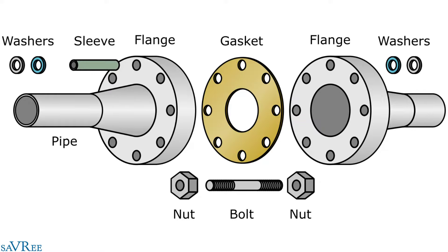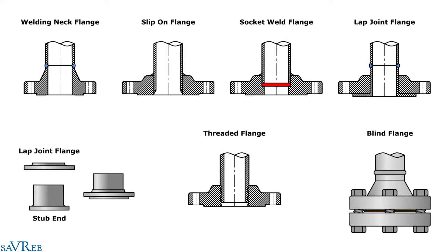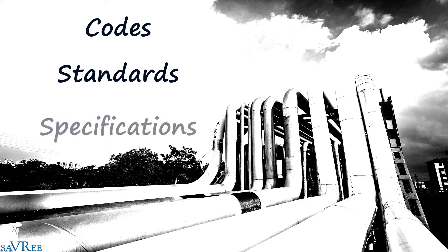The course covers flange terminology, how flanges work, and common flange types such as the welding neck flange, slip-on flange and lap joint flange. We'll also take a look at piping codes, standards and specifications from organizations like ASME, ASTM, ANSI and API.